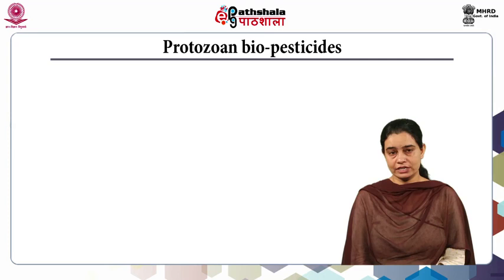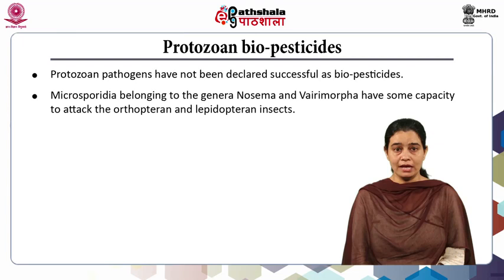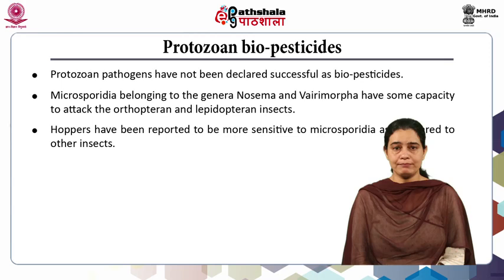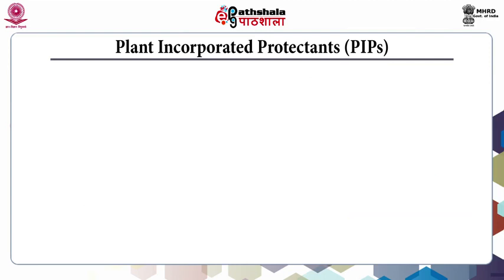Coming to the next classification, protozoan biopesticides have not been declared as much successful as biopesticides. Microsporidia belonging to the genera Nosema and Vairimorpha have some capacity to attack orthopteran and lepidopteran insects. Hoppers have been reported to be more sensitive to Microsporidia compared to other insects. Examples of protozoan biopesticides are Cruiser, Heterorhabdas, Nema-bit, and Grub-stick.